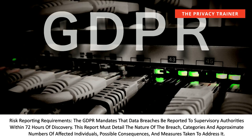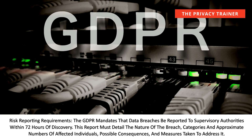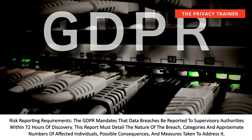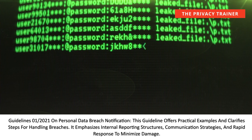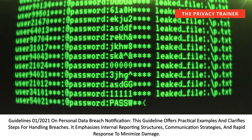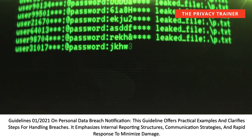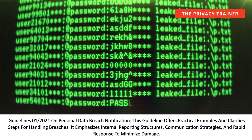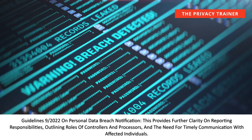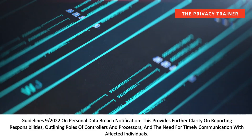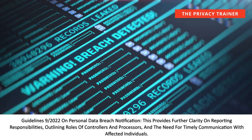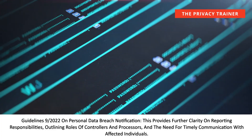The GDPR mandates that data breaches be reported to supervisory authorities within 72 hours of discovery. This report must detail the nature of the breach, categories and approximate numbers of affected individuals, possible consequences, and measures taken to address it. Guidelines 01-2021 on Personal Data Breach Notification offers practical examples and clarifies steps for handling breaches, emphasizing internal reporting structures, communication strategies, and rapid response to minimize damage. Guidelines 09-2022 provides further clarity on reporting responsibilities, outlining roles of controllers and processors and the need for timely communication with affected individuals.